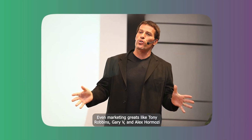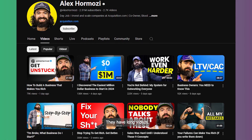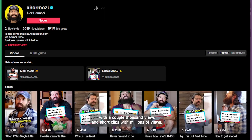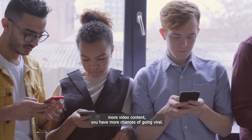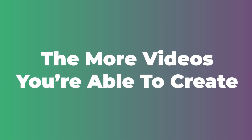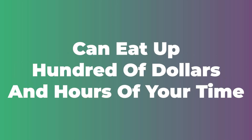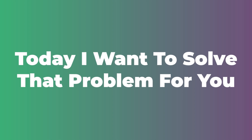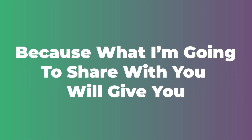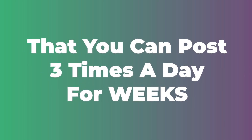Even marketing greats like Tony Robbins, Gary Vee, and Alex Hormozi create and post short videos consistently. They have long videos with a couple thousand views and short clips with millions of views. This means two things: people love short-form content, and if you produce more video content, you have more chances of going viral. The more videos you are able to create, the better results you will get. Creating just 10 viral short videos can eat up hundreds of dollars and hours of your time. That's where most people give up.